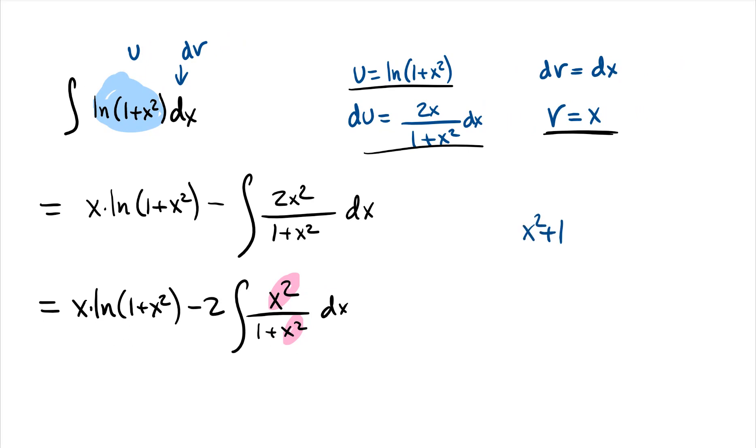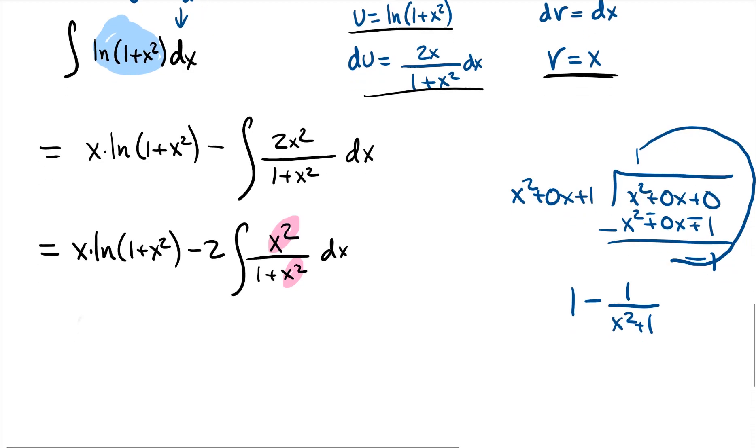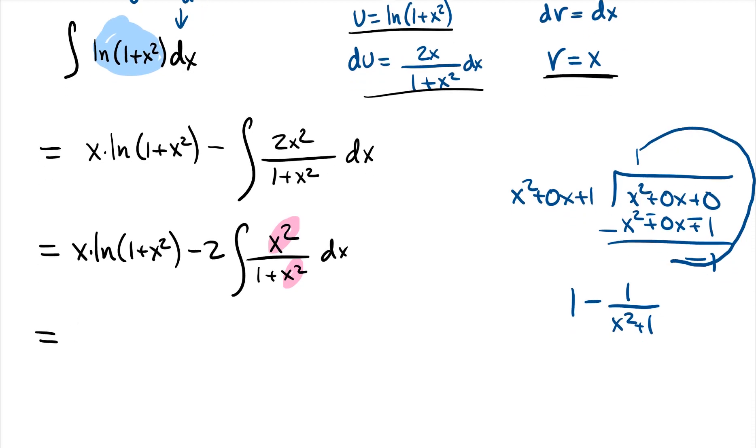So x squared plus 1, that's the bottom right, 1 plus x squared. We're going to write in descending order, but hold on, let's write it differently. x squared plus no x's plus 1 goes into x squared plus no x's plus nothing. So we're like, x squared times what equals x squared? That's x squared. Now we subtract them out, change all the signs, and we get negative 1. So this is equal to 1 minus 1 over x squared plus 1.